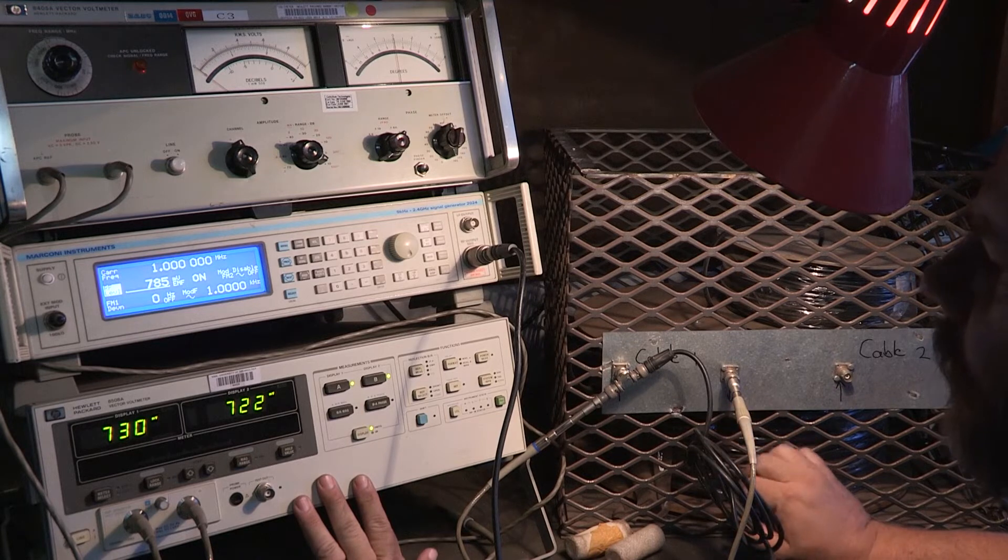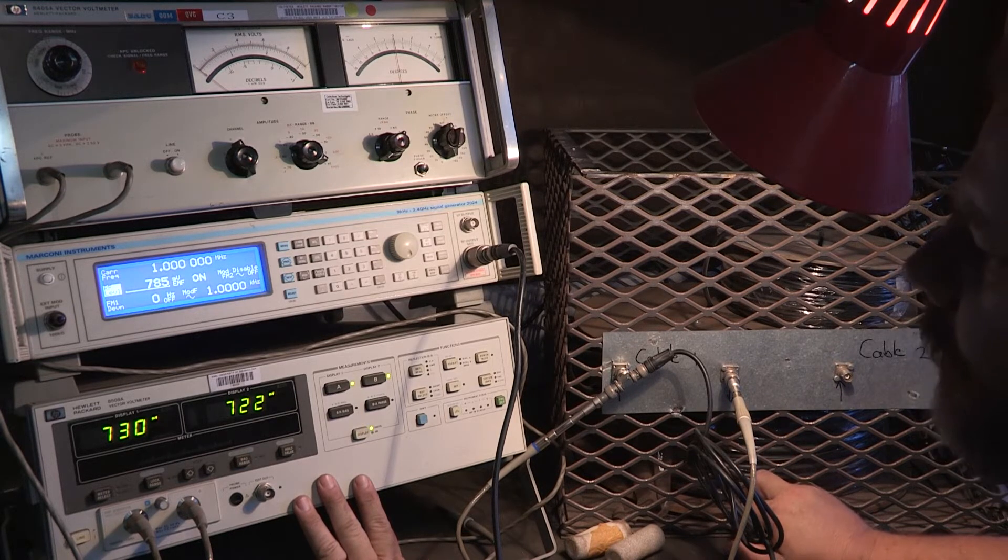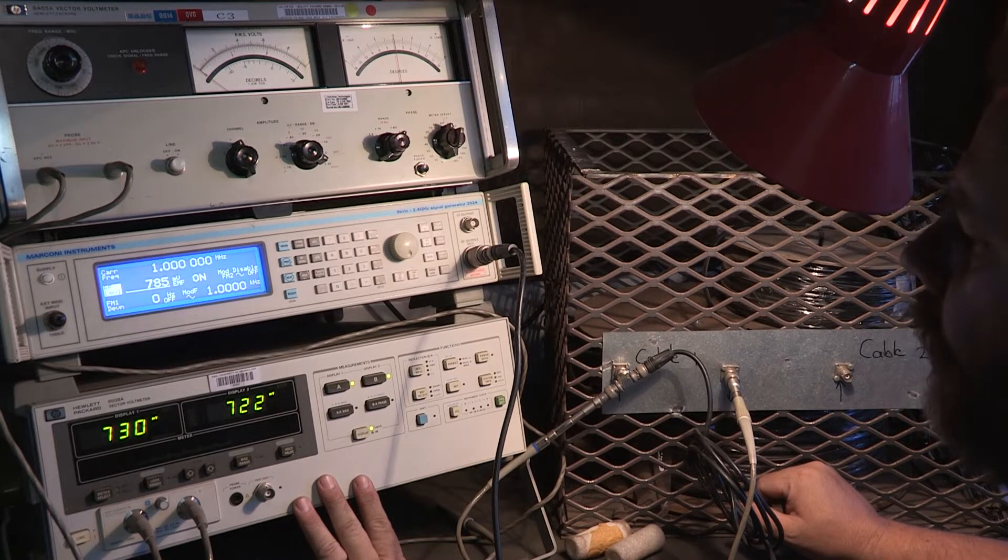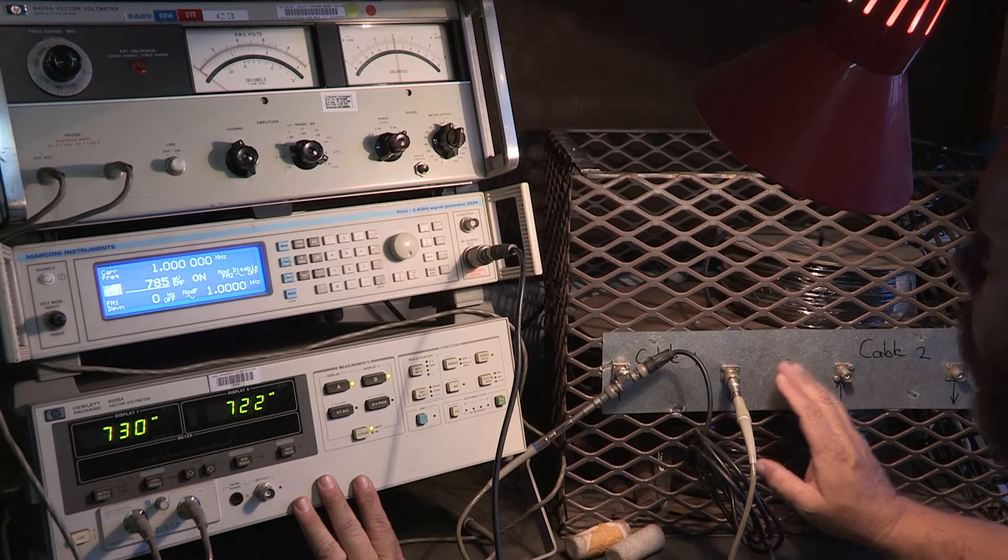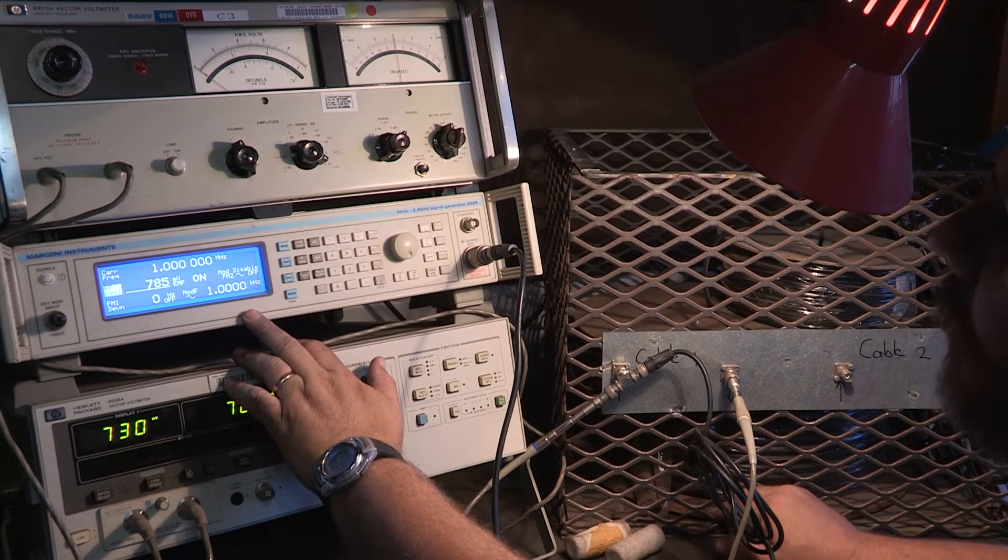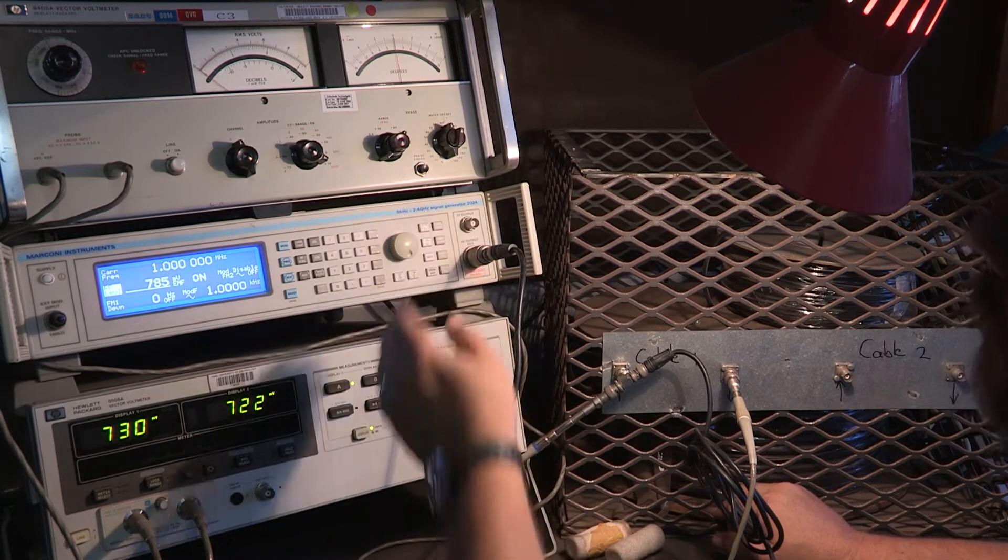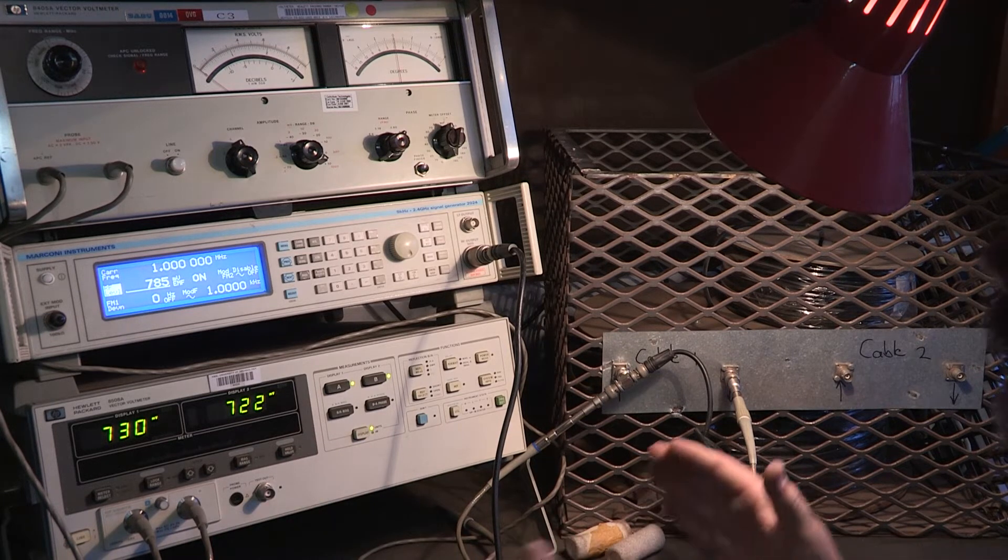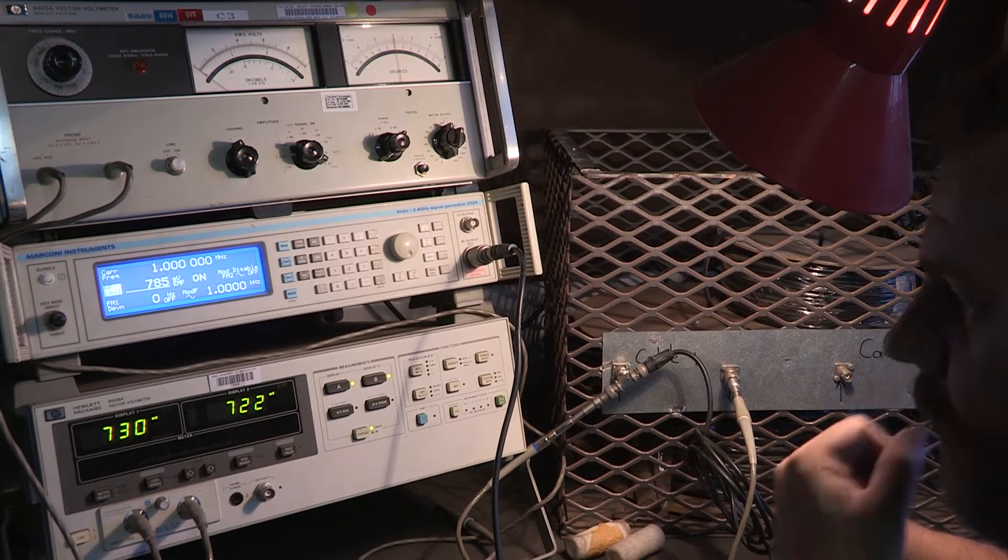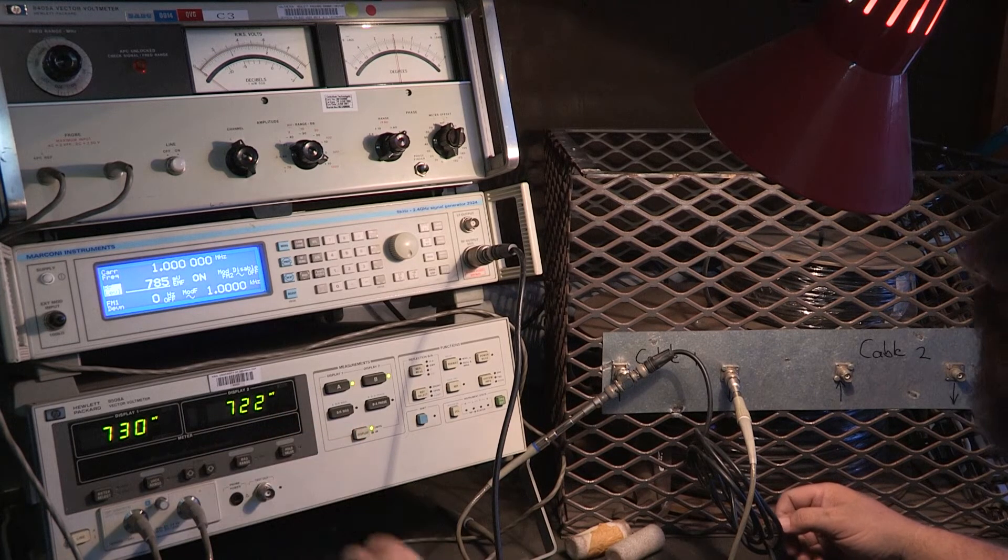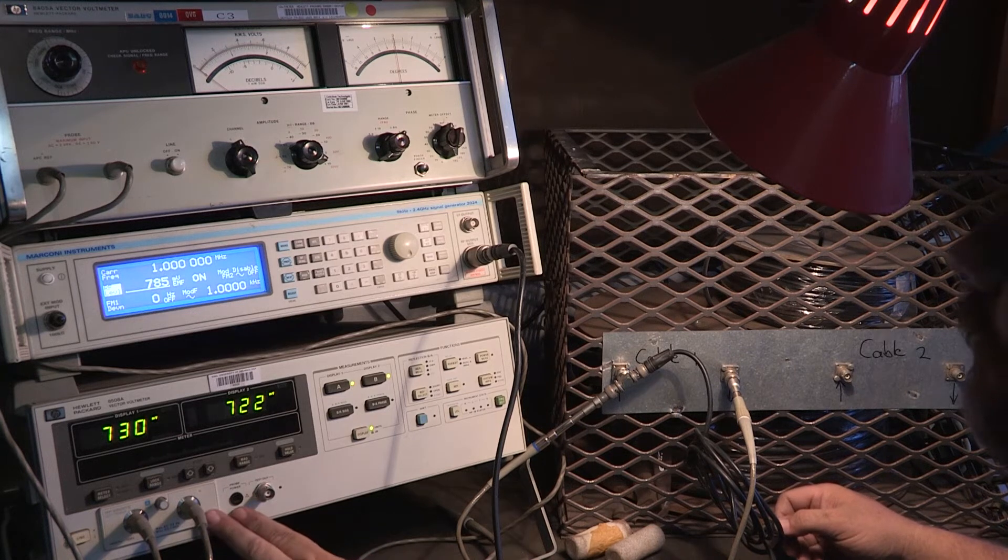The setup is very simple. I've got a vector voltmeter, which is a special voltmeter for measuring voltages across a range of frequencies. And then I have a radio signal generator that can go up to 2.4 gigahertz. We're going to choose certain frequency intervals, and at each frequency interval, take down the reading here.